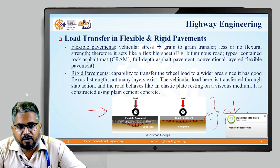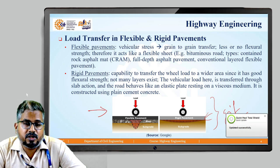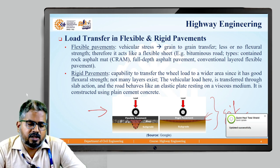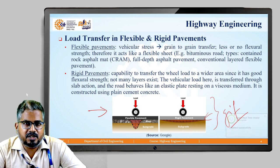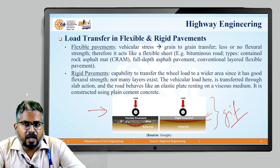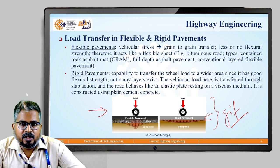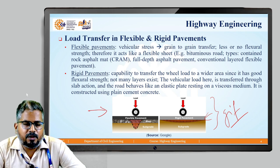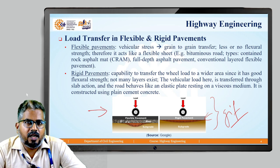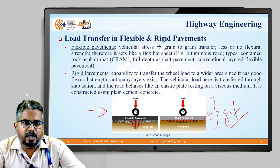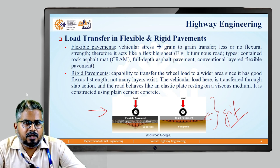In flexible pavement, the stress caused by vehicle movement is transferred from grain to grain. Flexible pavement has no or negligible flexural strength, so it acts like a flexible sheet — for example, a bituminous road. Other types include CRAM (Contained Rock Asphalt Mat) and various other conventional flexible pavements.